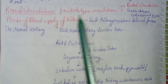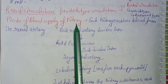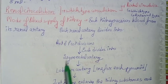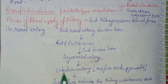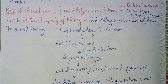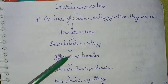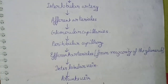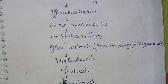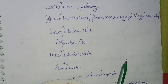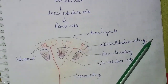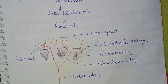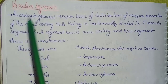Coming to renal circulation: the renal circulation is a portal circulation of the arterial type. Each kidney receives blood from its renal artery. The renal artery divides into anterior and posterior divisions, then into segmental arteries (one for each pyramid), then interlobar arteries. At the corticomedullary junction they branch into arcuate arteries, then interlobular arteries, afferent arterioles, glomerular capillaries, peritubular capillaries, efferent arterioles from the majority of glomeruli, interlobular veins, arcuate veins, interlobar veins, and finally the renal vein.